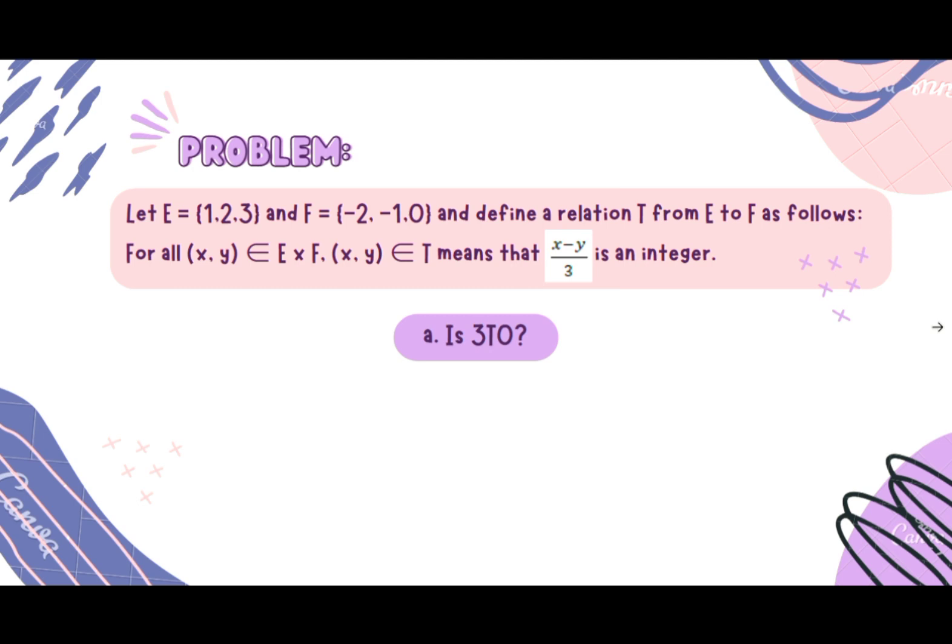What we have here is letter A: is 3T0? Or in other words, is 3 related to 0? With this, we just need to substitute these given numbers. We will have 3 replace our x and 0 replace our y.